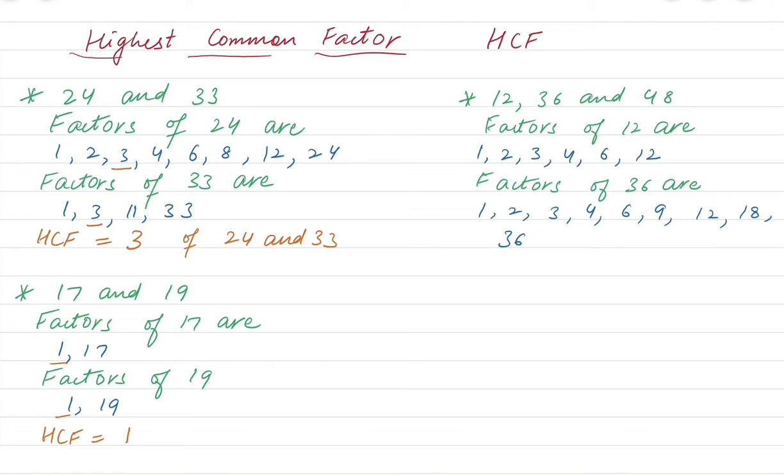Now factors of 48. For all three numbers we need to find the factors. So for this one is 1, 2, 3, 4, 6, 8, 12, 16, 24, 48.